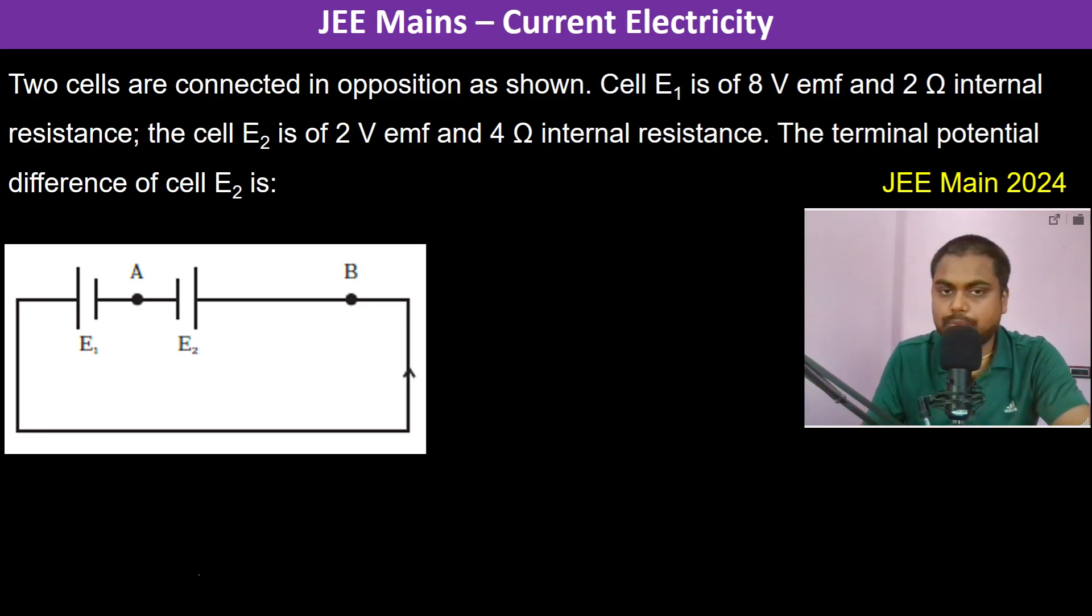Two cells are connected in opposition as shown. Cell E1 is of 8 volt EMF and internal resistance of 2 ohm. Cell E2 is of 2 volt EMF and 4 ohm internal resistance.